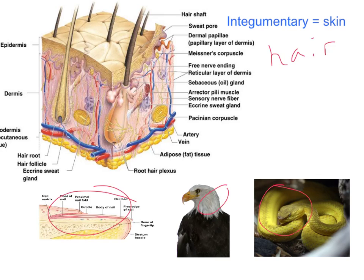The human skin is divided into a couple of layers. We've got the epidermis, which is the top layer, and then the dermis, which is the larger layer underneath.